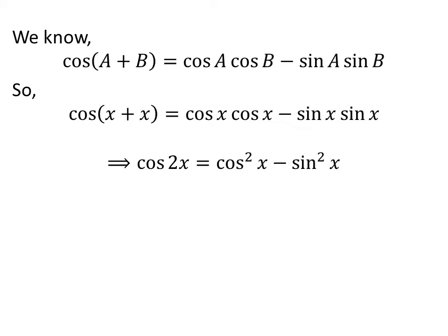x plus x is equal to 2 times x, so cosine of 2 times x is equal to square of cosine of x minus square of sine of x.